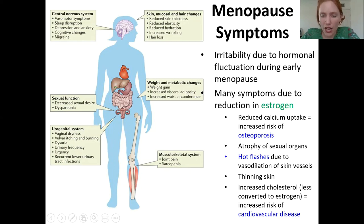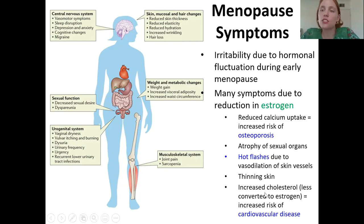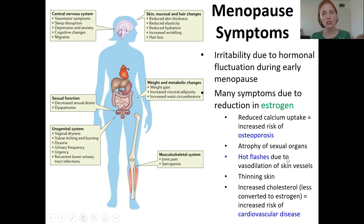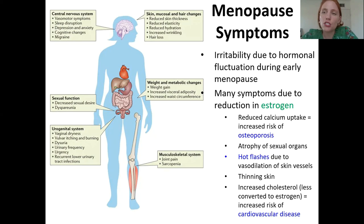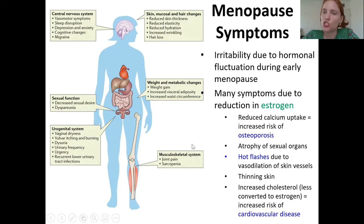It also can increase your risk of cardiovascular disease. Estrogen, as a steroid, is made from cholesterol. If you're not using cholesterol to make estrogen, you're going to have more cholesterol. Levels of cholesterol go up, meaning more low-density lipoproteins, which can lead to atherosclerosis, heart attacks, and strokes — general cardiovascular diseases.